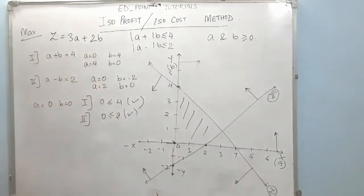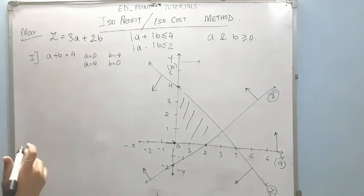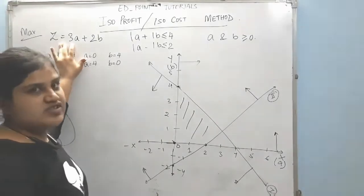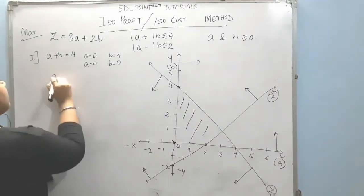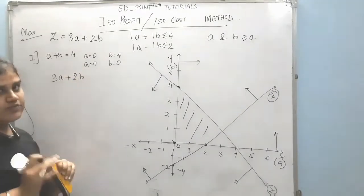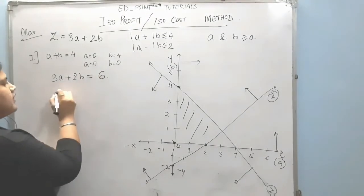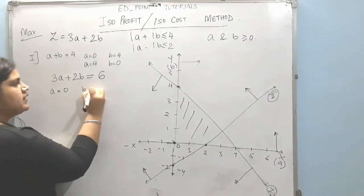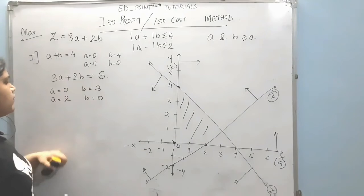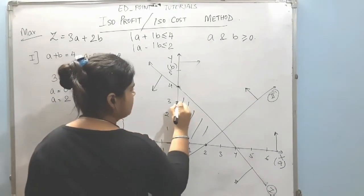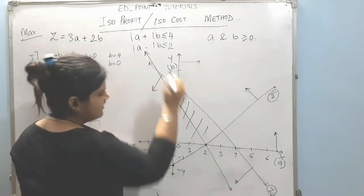Now let us solve this using the isoprofit method. We start with the objective function again, but this time we assume some value for it. So for 3a plus 2b, let us consider this equal to 6. When a equals 0 we get b equals 3, and when b equals 0 we get a equals 2. Plotting these two points gives us the isoprofit line.